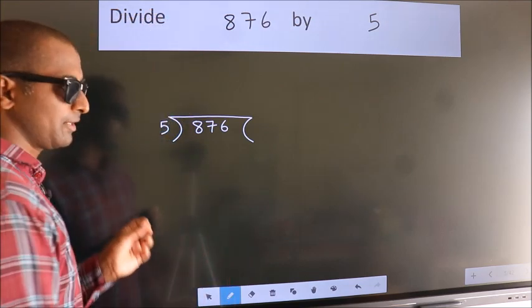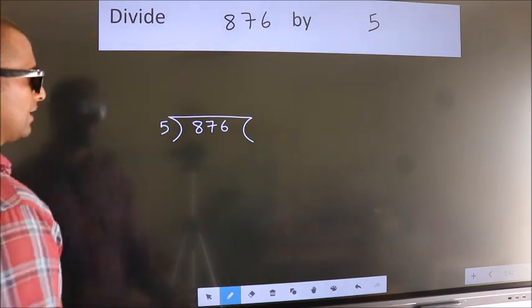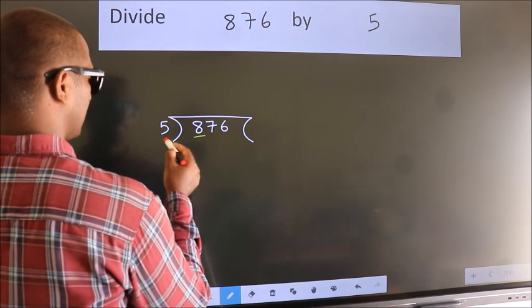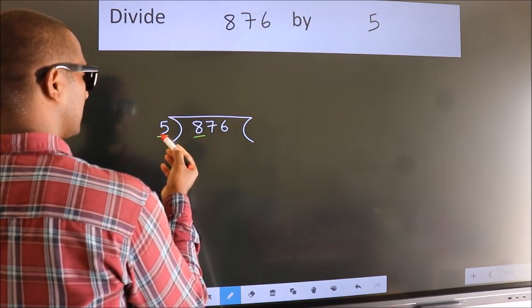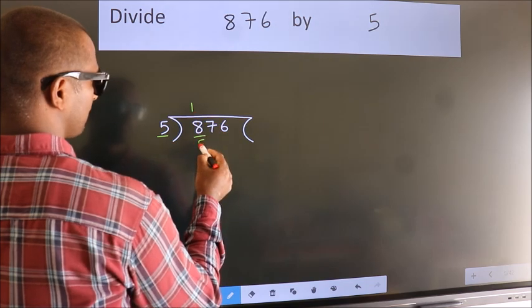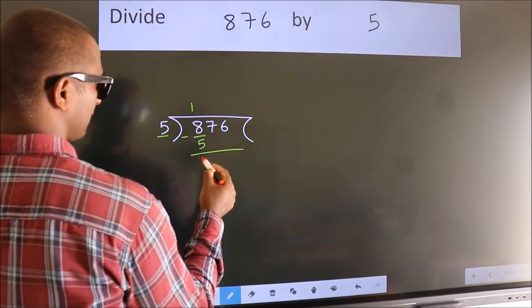This is your step 1. Next, here we have 8, here 5. A number close to 8 in the 5 table is 5 once 5. Now, we should subtract. We get 3.